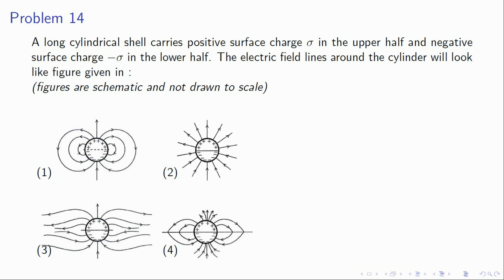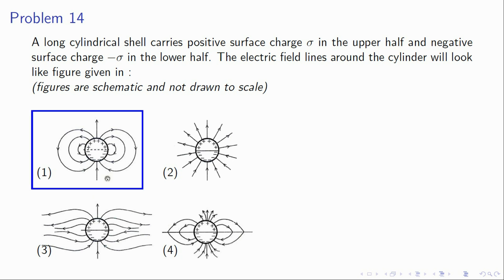Problem 14: a cylindrical shell has surface charge +σ on one side and −σ on the other side. The correct electric field line pattern starts from the positive side, goes to the negative side, and is symmetric on both sides. Other options are wrong — one shows lines going to infinity, another has an abrupt change without a dielectric. Option 1 is correct.